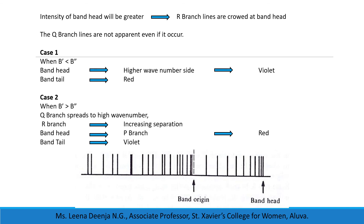Since many rotational levels are populated even at room temperature, a large number of P, R, and Q branch lines will appear in the spectrum with comparable intensity. The intensity of the band head will be greater because several R branch lines are crowded at the band head. The Q branch lines are not apparent even if they occur. The spectrum can be divided into two cases. In the first case, when B' < B'', the band head appears on the higher wavenumber side of the origin. Such a band is said to be degraded towards the red, meaning the tail of the band where intensity is minimum is towards the red.